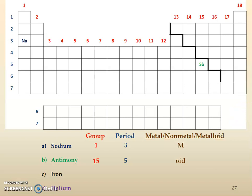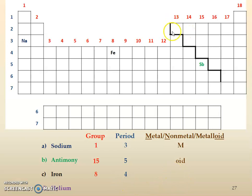Find iron — a little easier since its symbol is Fe. The group number is 8 and the period number is 4. He's to the left of the stair step line so he's considered a metal. However, because he's in groups 3 through 12, he's also considered a transition metal — not only a metal but more specifically a transition metal.